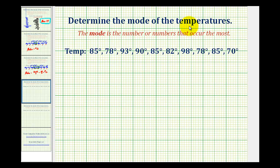We want to determine the mode of the given temperatures. The mode is the number or numbers that occur the most.